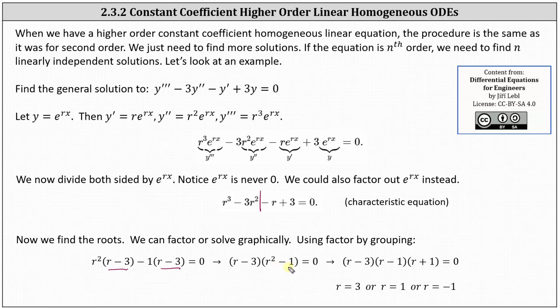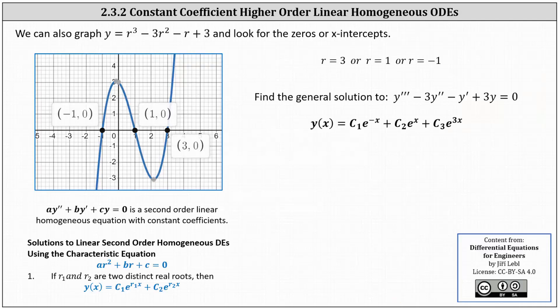r squared minus one is a difference of squares, giving us a factor of r minus one and a factor of r plus one. The three roots are r equals three, r equals one, and r equals negative one. Notice we have three distinct real roots. On the left, if we were to graph the characteristic equation, notice how we do have roots of negative one, one, and three.